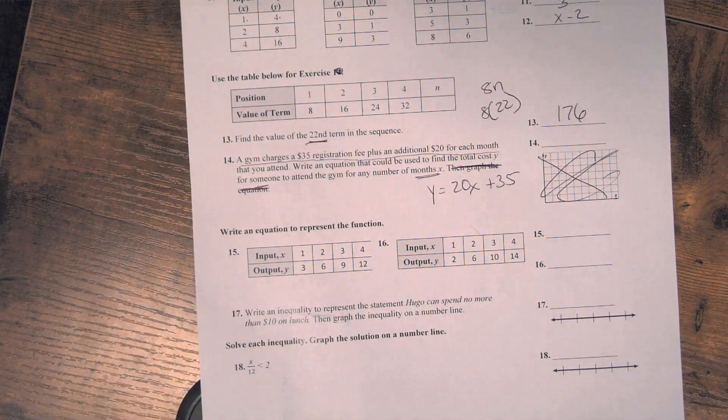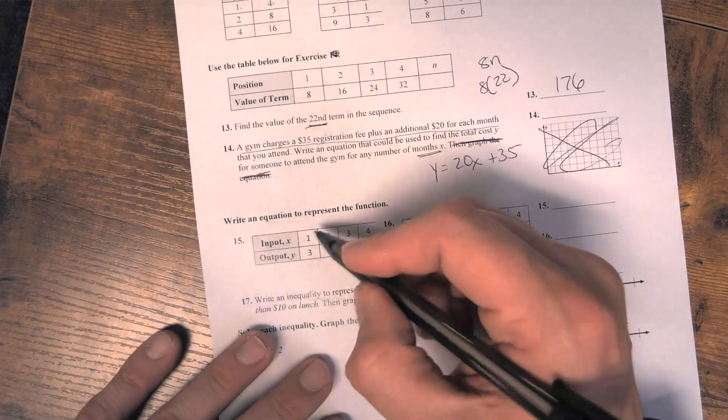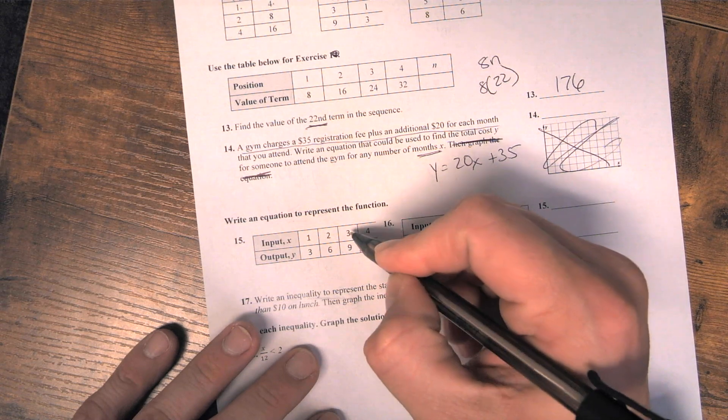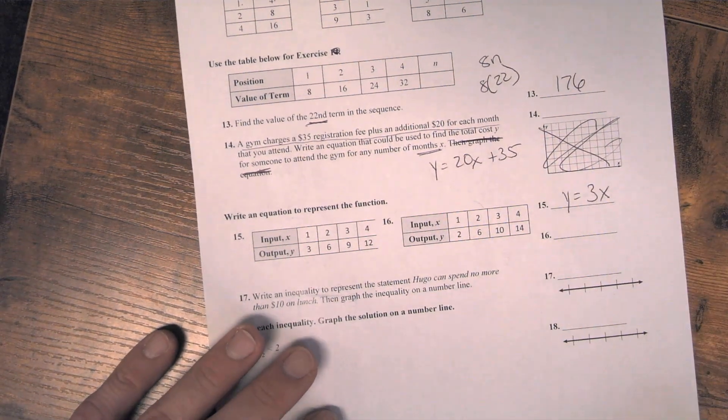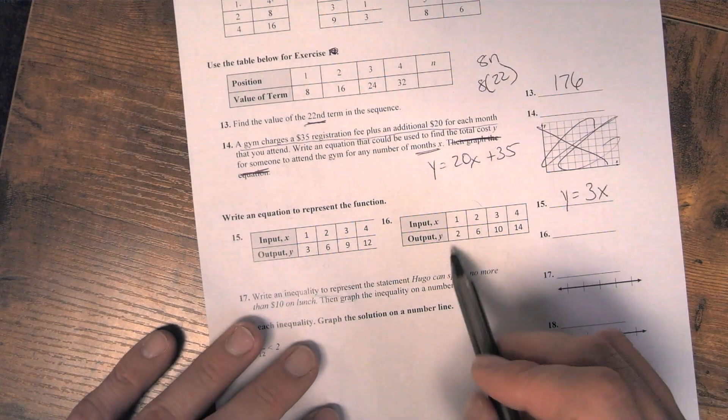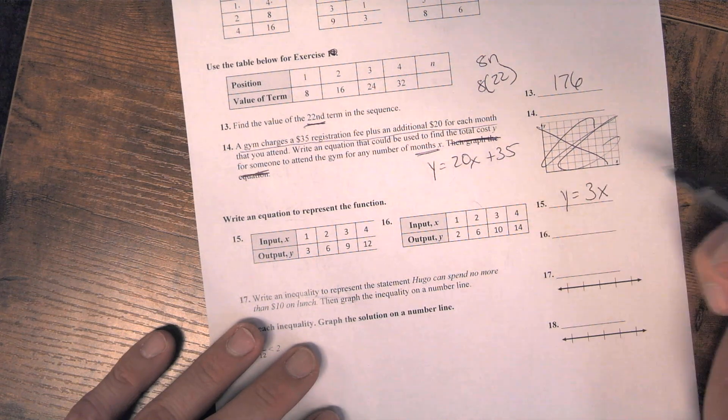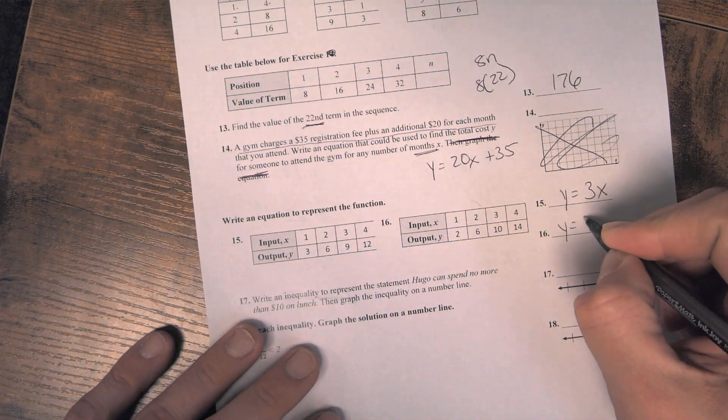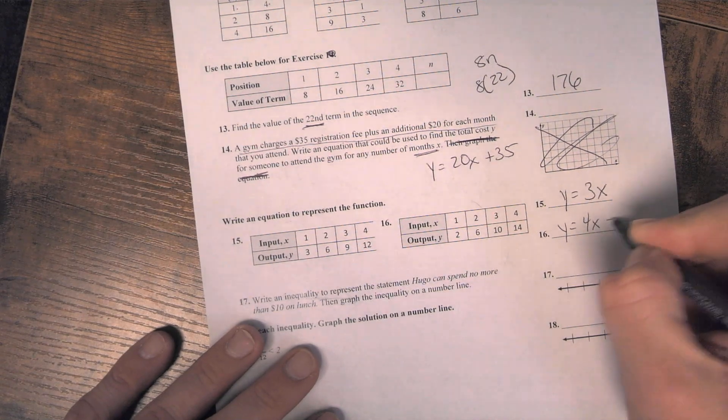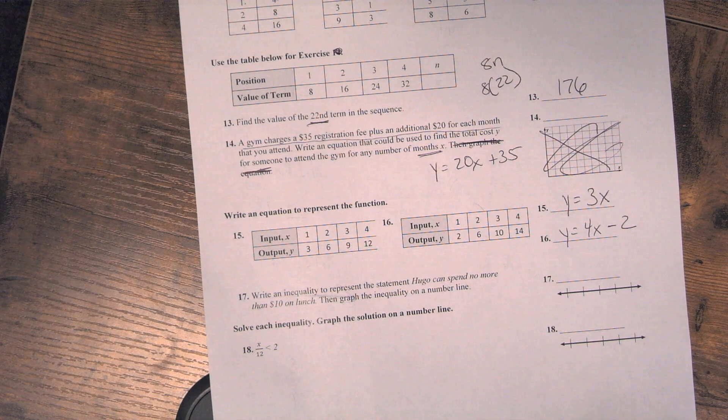15 and 16, you're writing the equation for each function table. So they go from 1 to 3, 2 to 6, 3 to 9, 4 to 12. That's y equals 3x. They're multiplying by 3. 16: 1 to 2, 2 to 6, 3 to 10, 4 to 14. So there's going to be 2 steps here. Y equals 4 times x minus 2. So you've got to multiply by 4 and then minus 2.